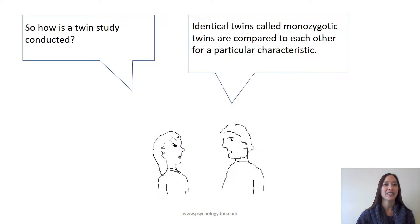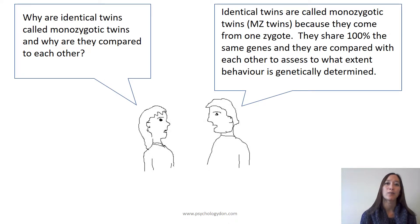How is a twin study conducted? First of all, you recruit identical twins, called monozygotic twins, and these are compared to each other for particular characteristics, such as IQ, having schizophrenia, or personality, like how extrovert they are. Identical twins are called monozygotic twins or MZ twins because they come from one zygote or one fertilised egg. Identical twins share 100% of the same genes, and they are compared to each other to assess to what extent behaviour is genetically determined.